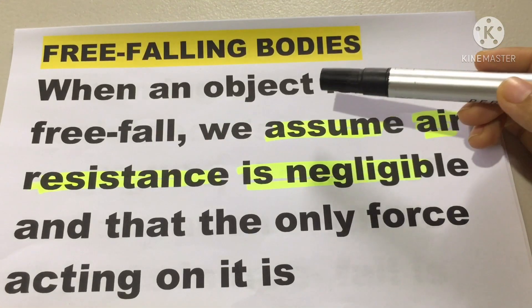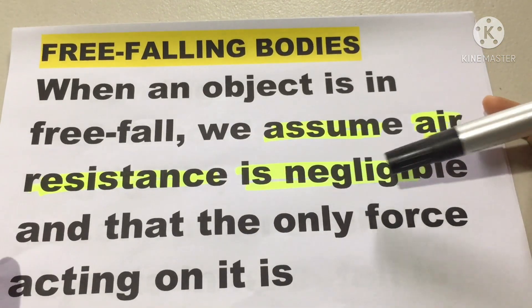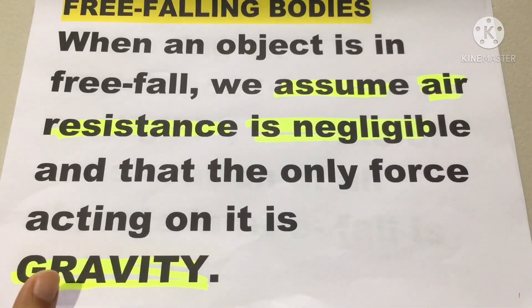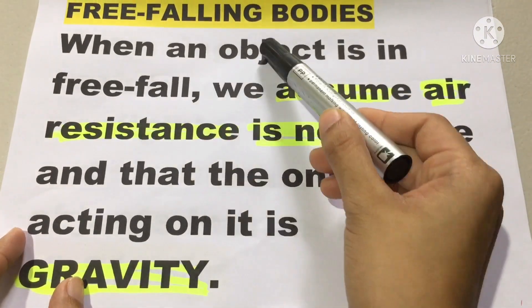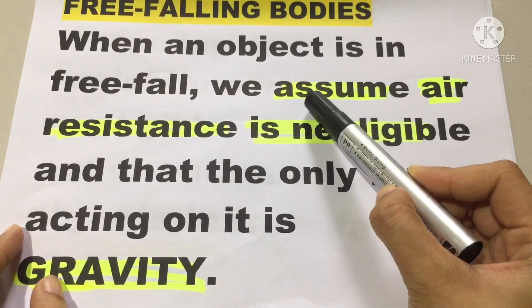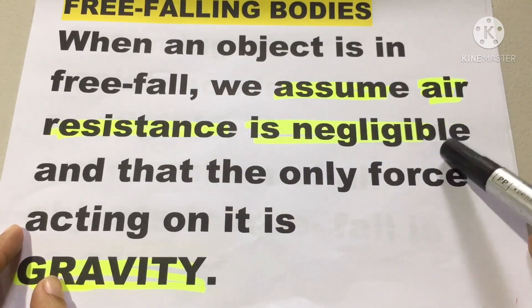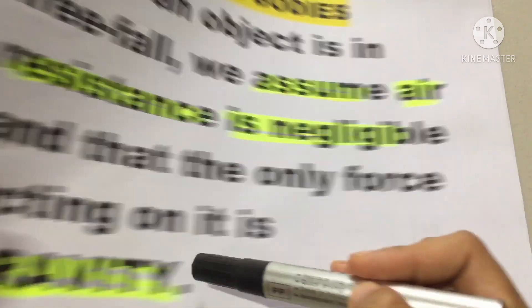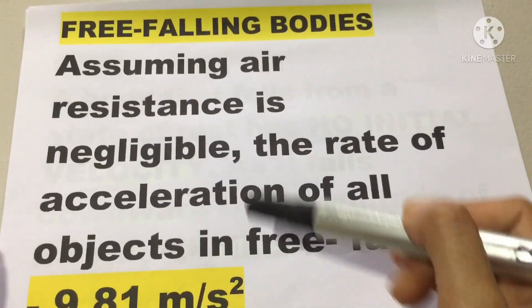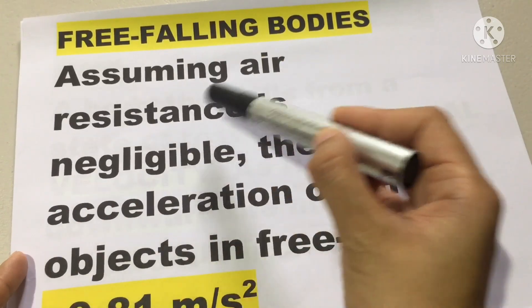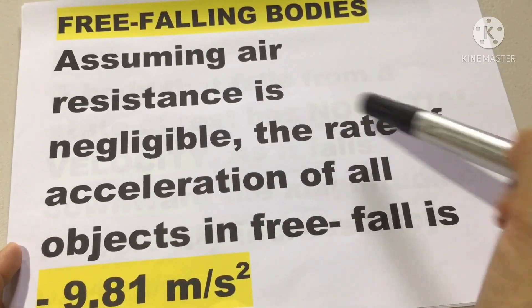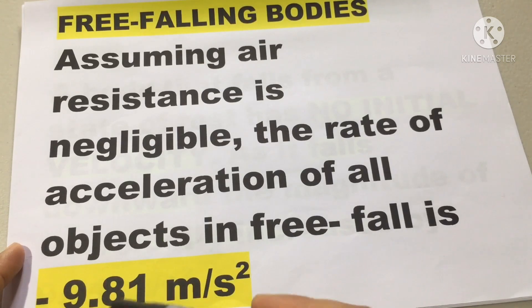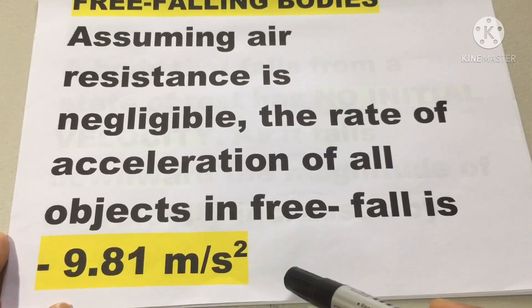When an object is in free fall, we assume air resistance is negligible and that the only force acting on it is gravity. In free falling bodies, we are going to assume that air resistance is negligible and that force acting on it is gravity. Therefore, the rate of acceleration of all objects in free fall is negative 9.81 meters per second squared.